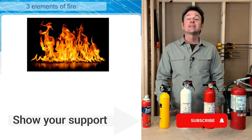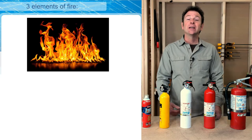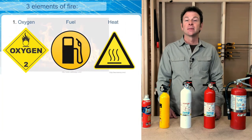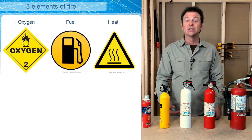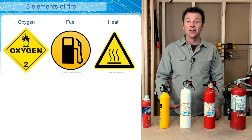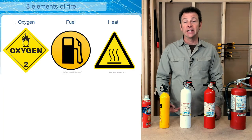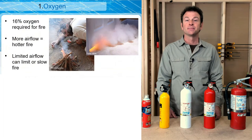To understand fire risks on a job site, we need to first understand what causes fire. There are three main elements that lead to fire: oxygen, a source of fuel, and a source of heat. These three things combined will cause a fire.